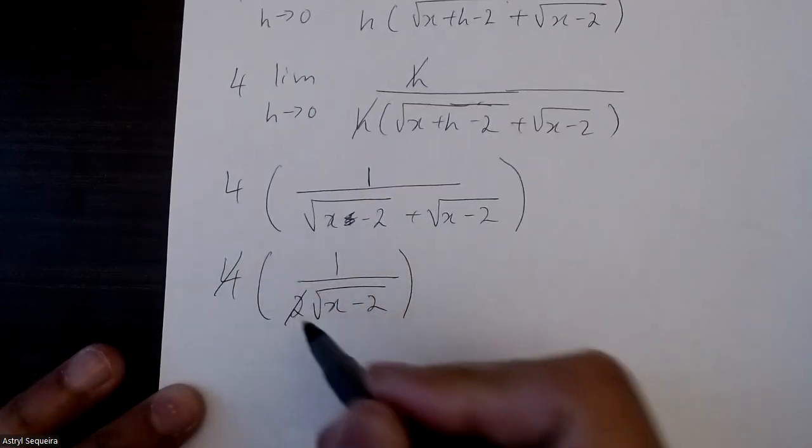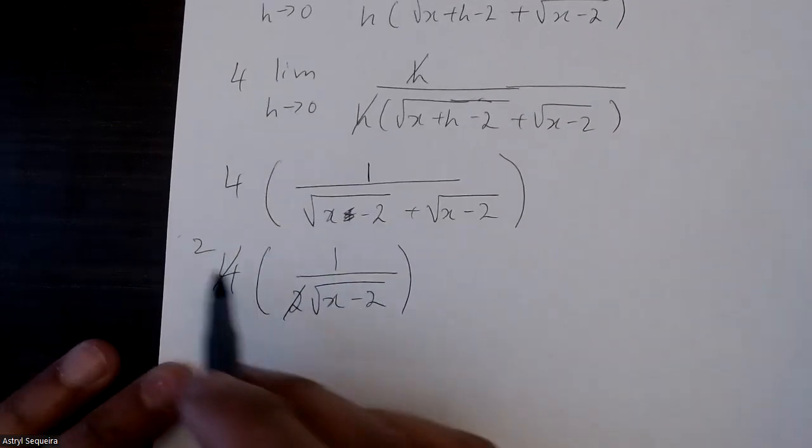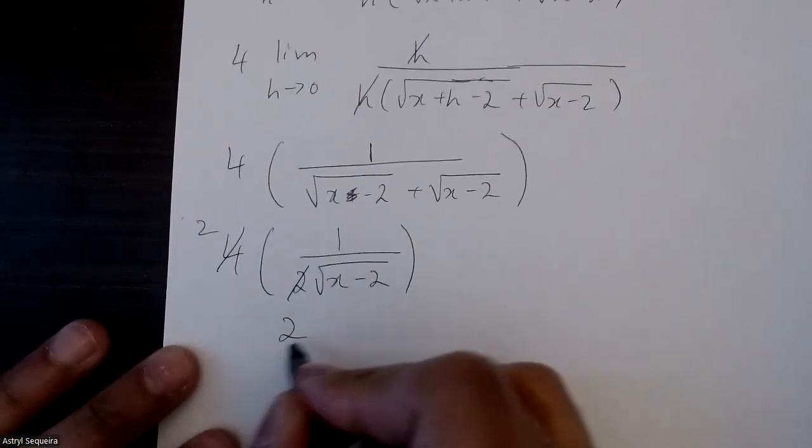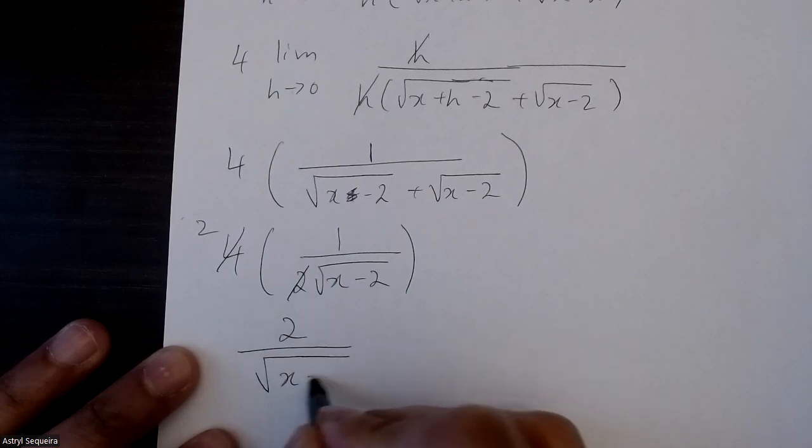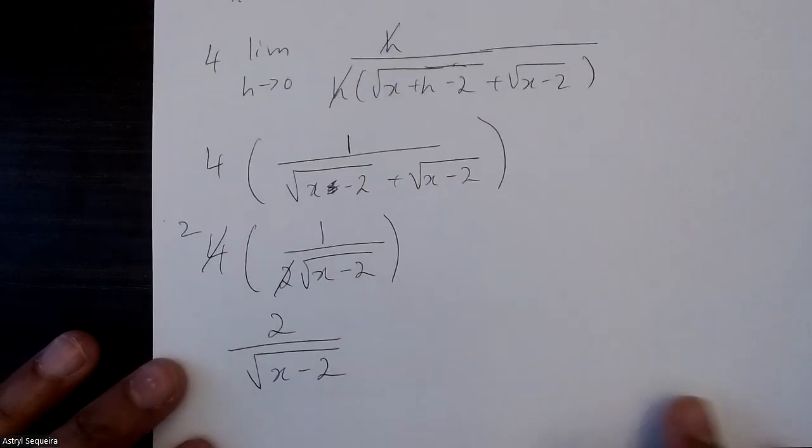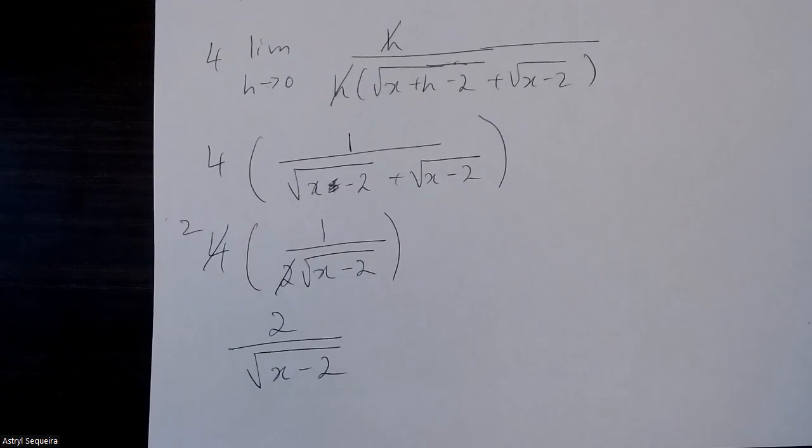This 4 can cancel with this 2 and you're left with just a 2. So 2 times 1 on the top is just 2, and the bottom is just root x minus 2. And this is my final solution, which is the derivative of the original. This is my final equation.